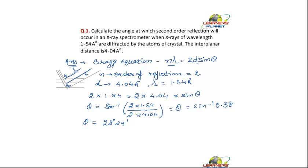Similarly students, likewise if in this type of question where Bragg equation is to be applied, you can be asked to find out the order of reflection that is N, or the wavelength of the incident light that is lambda, or the distance. So what is the answer to this question? It is theta is equal to 22 degrees 24 minutes.